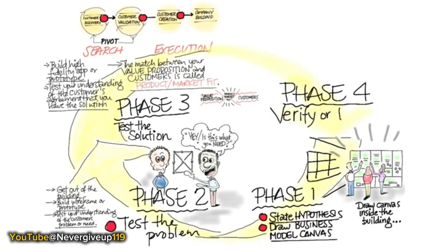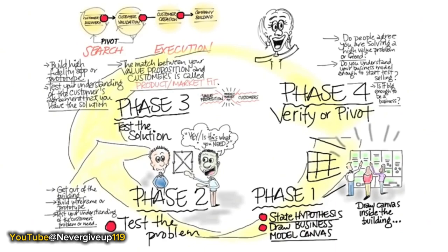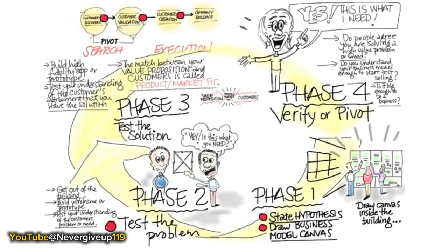The fourth phase in customer discovery is you verify or pivot. Do people agree you're solving a high-value problem or need, and do you understand your business model enough to start test selling? What's really depressing to most entrepreneurs is the answer the first time through is usually 'no.' And 'kind of, sort of' is not a startup - 'kind of, sort of' means people have been nice to you. The only time you know you have something worth investing in is if people are literally trying to force their money on you or can't use your product enough even in its buggy form. That's why customer development is an iterative circle - it assumes you'll go through this multiple times.